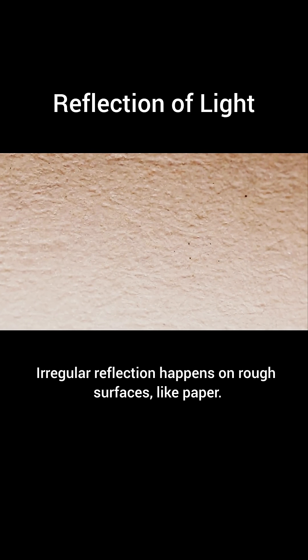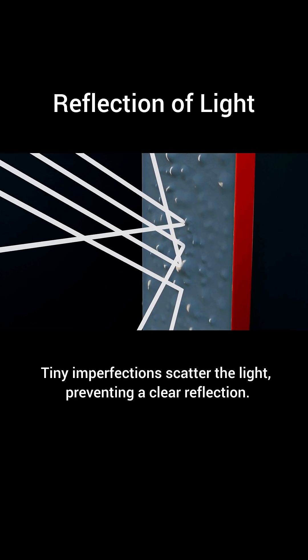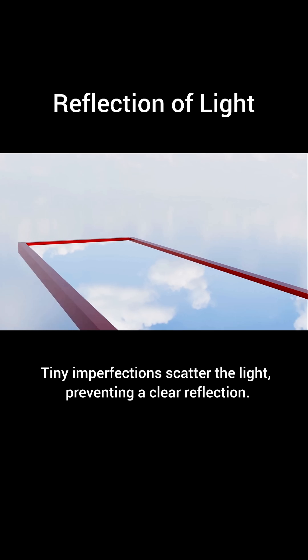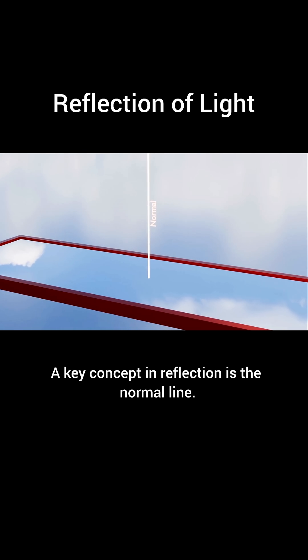Tiny imperfections scatter the light, preventing a clear reflection. A key concept in reflection is the normal line. It's an imaginary line at a 90-degree angle to the surface.